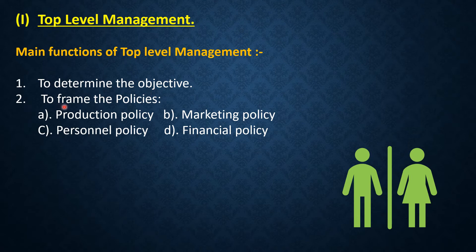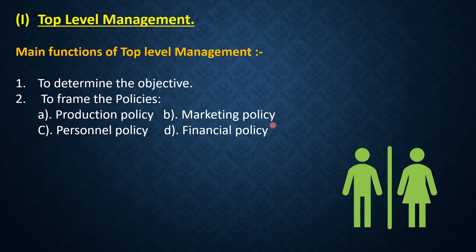Second point is to frame the policies. Top level managers frame plans and policies to achieve the set objectives. The first policy is production policy — its aim is to produce the right product at the right time and at the right place so that competition can be faced and the business can run for a long time. Production policy contains the schedule of production to meet market demand. The second policy is marketing policy, which includes channels of distribution, advertising, sales promotion, and technology to ascertain customer choice and ensure long-term stability and customer satisfaction.